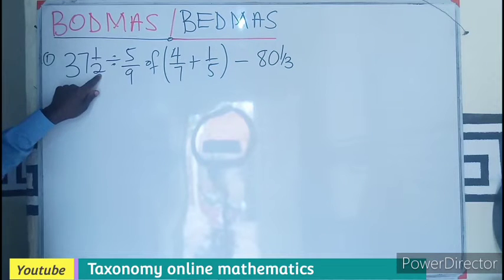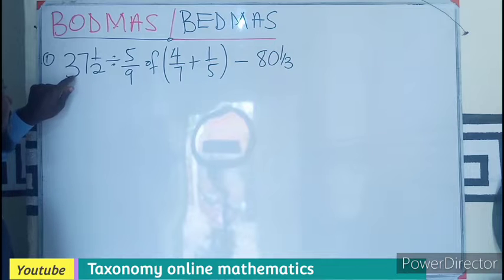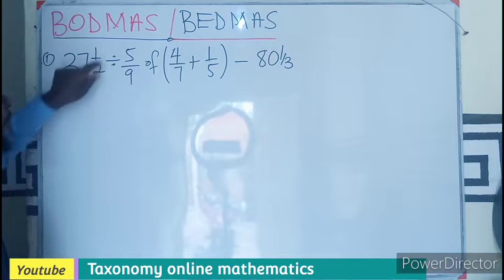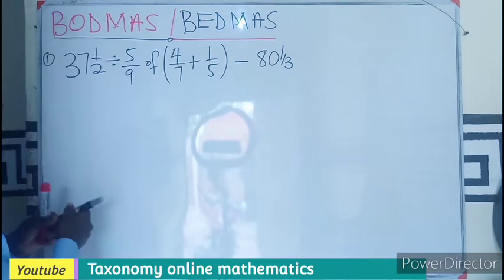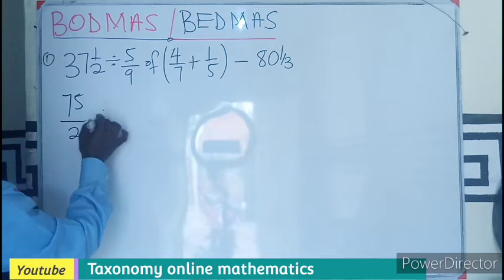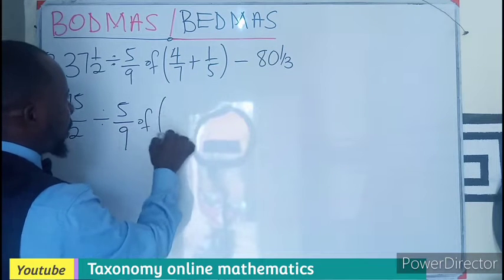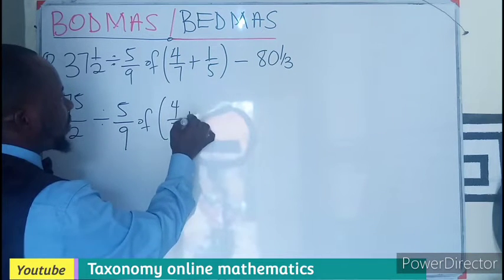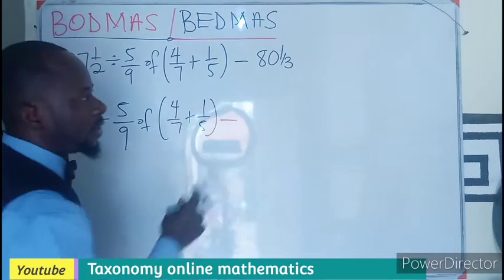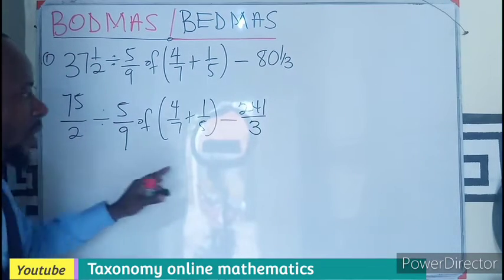Using our denominator here to multiply is like give us this times this, will be 60. Then this is going to be 14, so 74 plus this we have 75 over 2, divided by 5 over 9 of, in the bracket, 47 over 15 minus this would be 240, 240 plus 1, 241 over 3. So now this is the question.